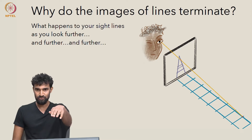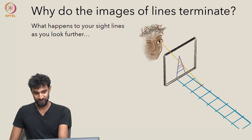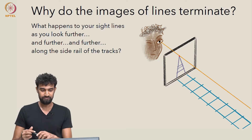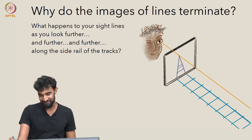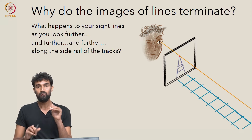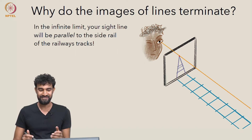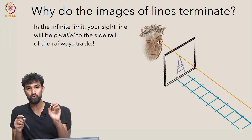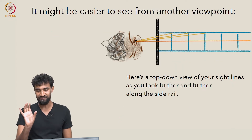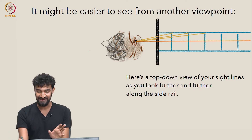Our sight line, as we look further and further down, is rising up. Looking further and further along, we approach a limit. In the infinite limit, your sight line will be parallel to the side rail of the two railway tracks.